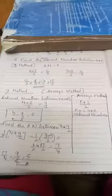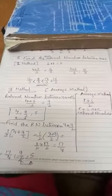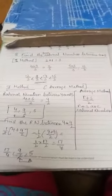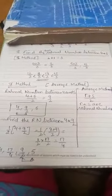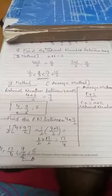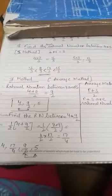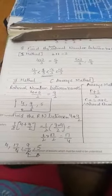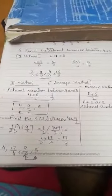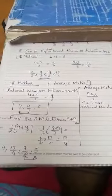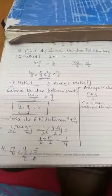The second method is by finding the average between the two rational numbers. Now, two rational numbers, we have 4 and 5. So, we will write average. How we calculate? By adding and dividing by 2. That is 4 plus 5 divided by 2 comes out to be 9 by 2. So, number between 4 and 5 will be 9 by 2. So, we can write 4, 9 by 2 and 5.